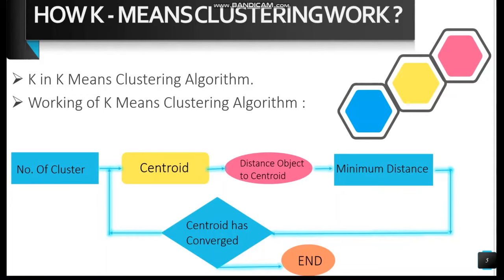In K-Means clustering, K is the number of clusters. For example, if you have 40 people and want to cluster them into four groups, then K equals four. The algorithm works in four steps: step one, pick the number of clusters and a centroid; step two, calculate the distance from each object to the centroid; step three, group the data based on minimum distance; and repeat until convergence. That is how K-Means clustering works.